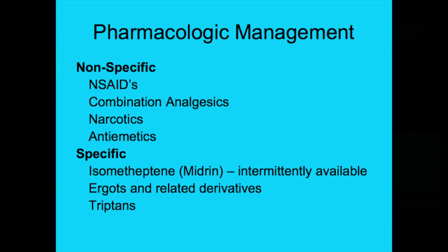In the nonspecific therapy realm, we're talking about non-steroidal anti-inflammatories or combination analgesics, some of which are over the counter, and then narcotic medications and anti-emetics. For specific therapies, we're mainly talking about the triptans nowadays, although there are a couple of other products: the isometheptine compound previously marketed under the brand name Midrin, which has been on and off the market depending on local supplies, and then the ergot and related derivatives — mainly DHE, which is the one most commonly used nowadays.